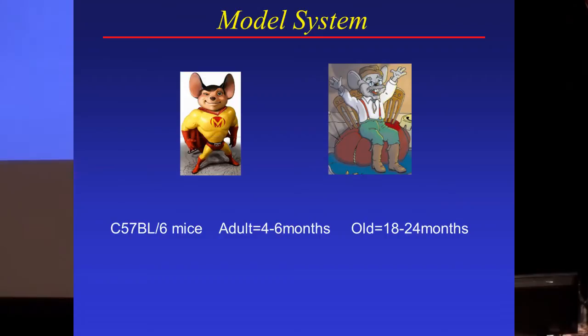Our model system is the B6 mice, which can be adult or old. Our adults are typically older than what most people use in immunological research — we like our mice to be past the hormonal storm of puberty. Our old mice are over 18 months old, generally 20 to 22 months old.